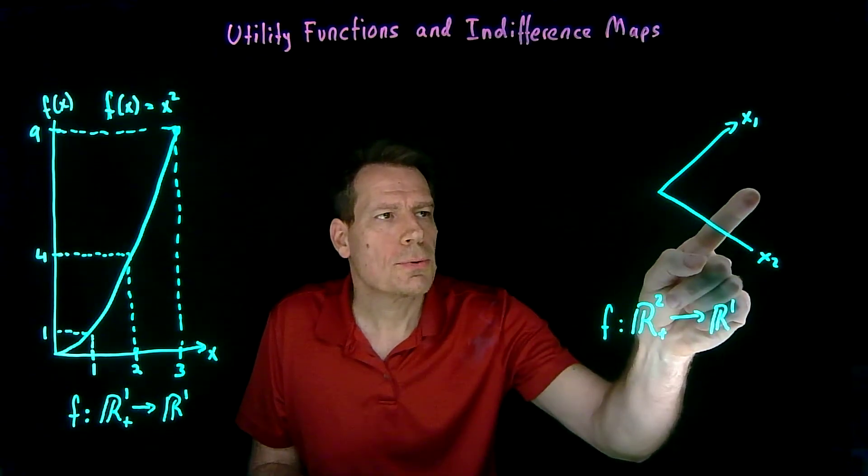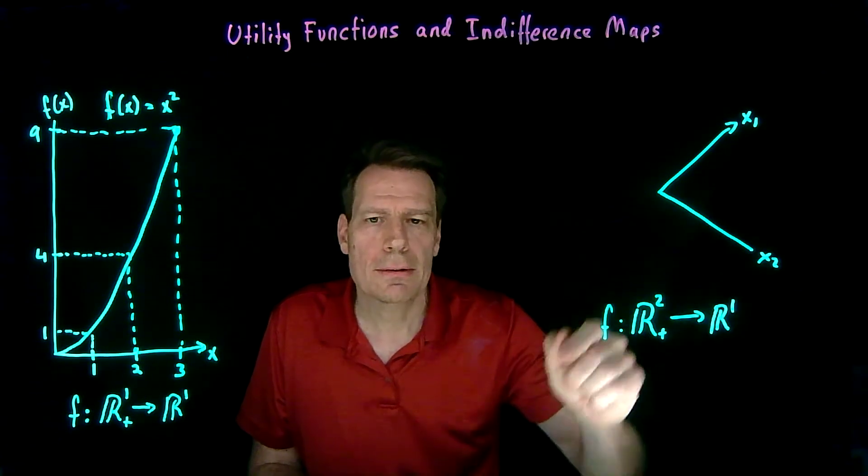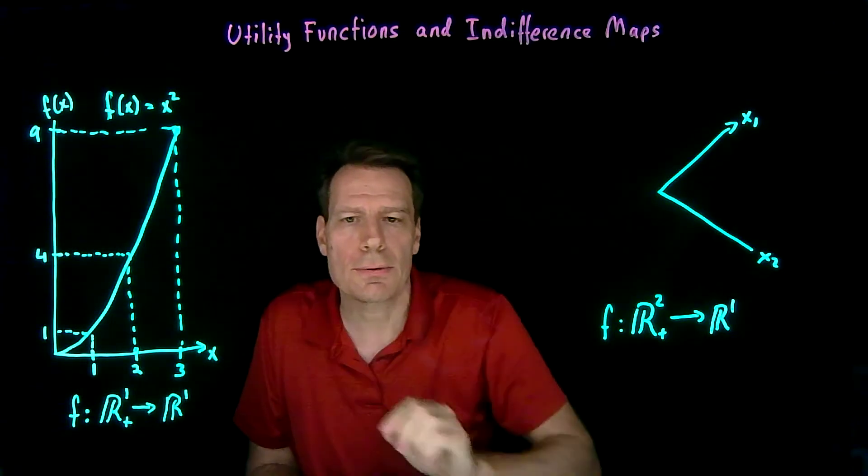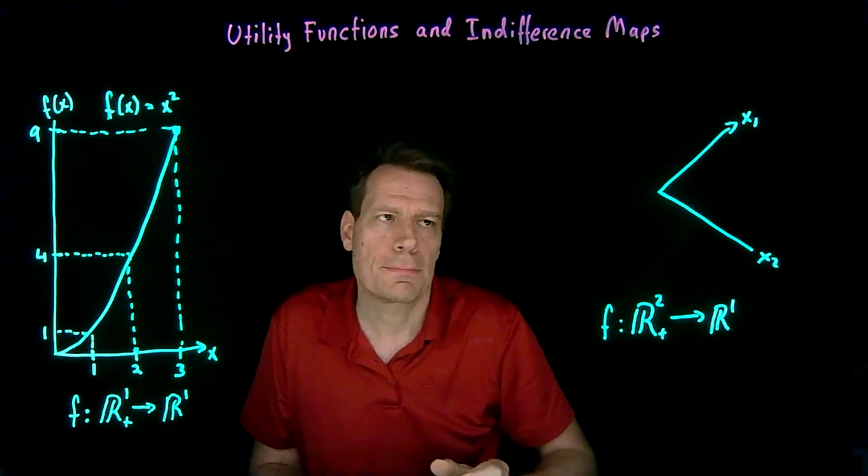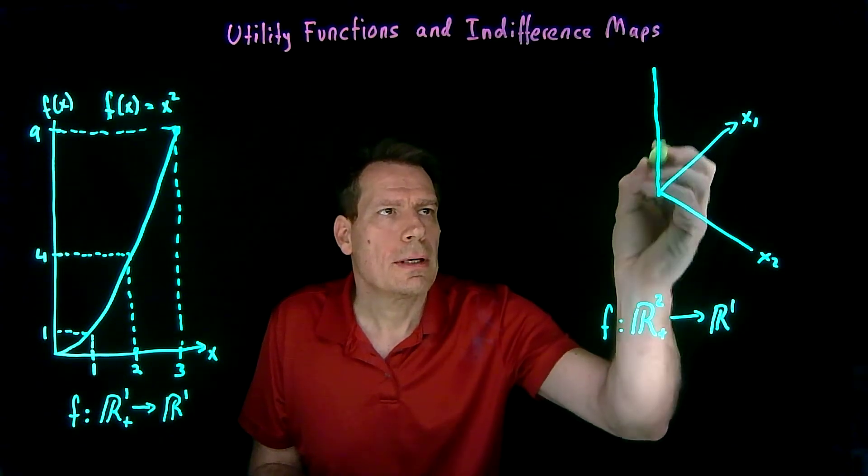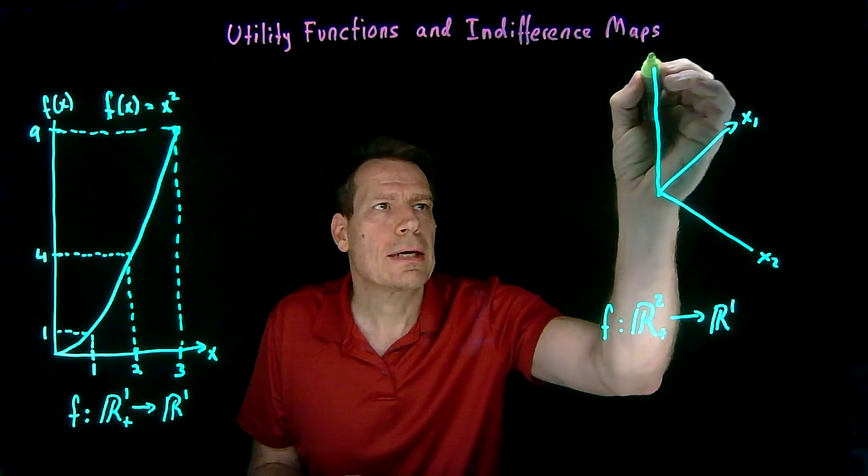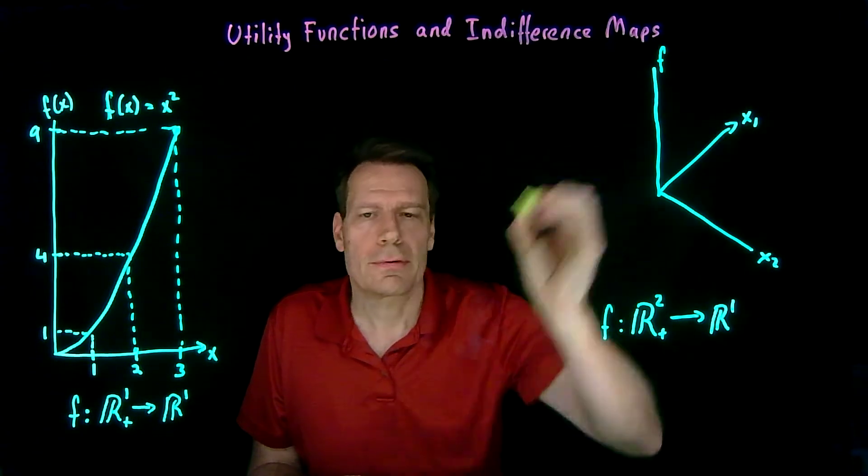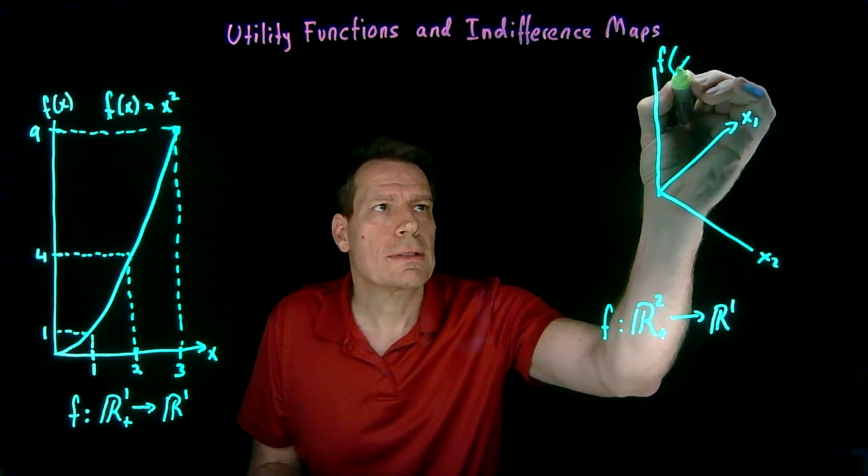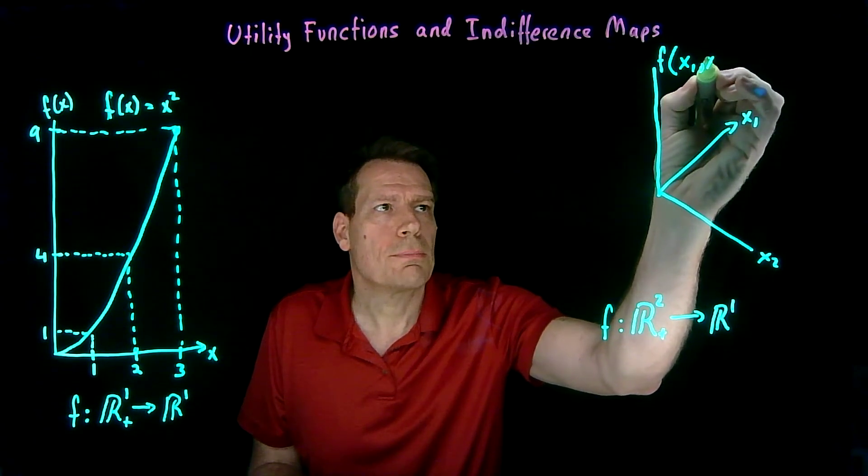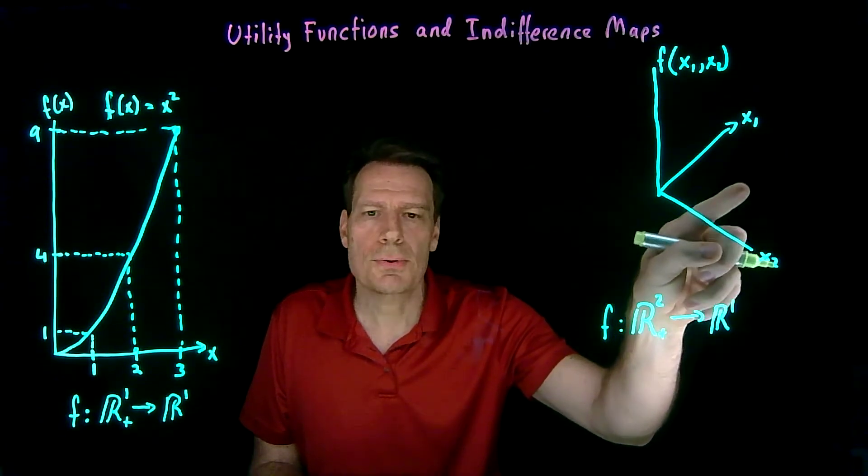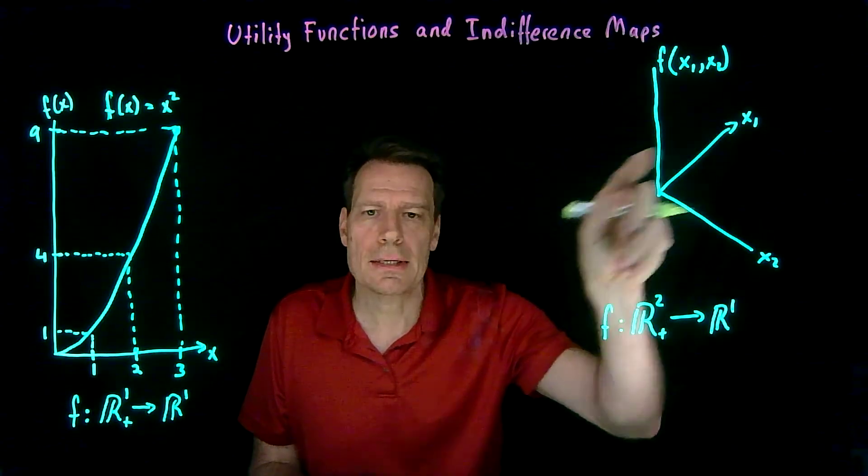When we use a function to assign numbers to these points, we need a vertical dimension, just like before, to indicate what numbers are assigned. So we can put in this vertical dimension, and on that axis, we indicate what the rule f tells us should be the number assigned to different points that have two components. So for every x1 and x2 component, that function assigns a number.